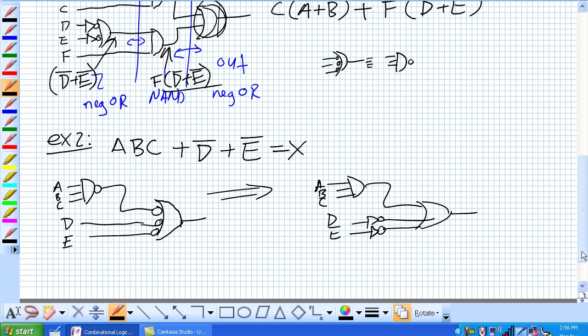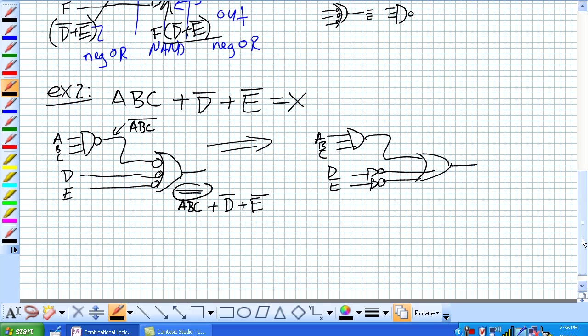And just to check, what's coming out here? Well, it's NOT A and B and C. Or NOT D or NOT E. We know that double negations will cancel each other out. A, B, C OR NOT D OR NOT E.